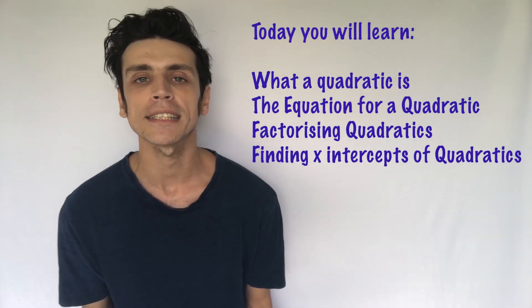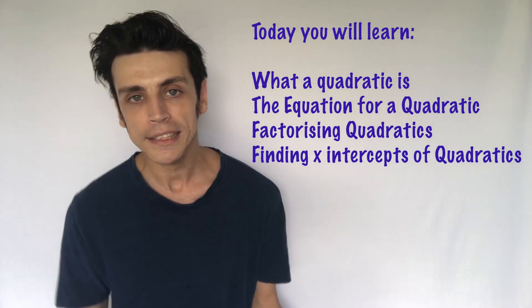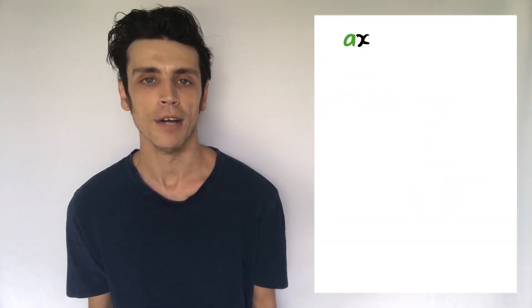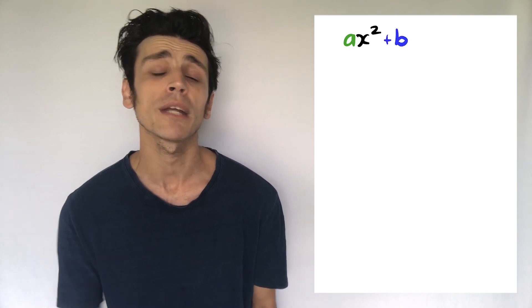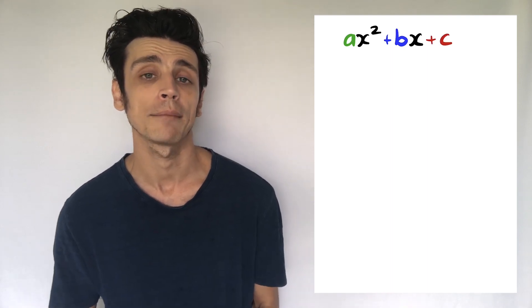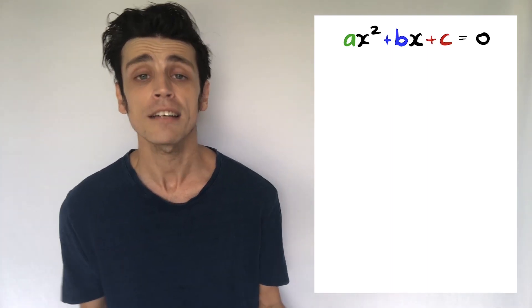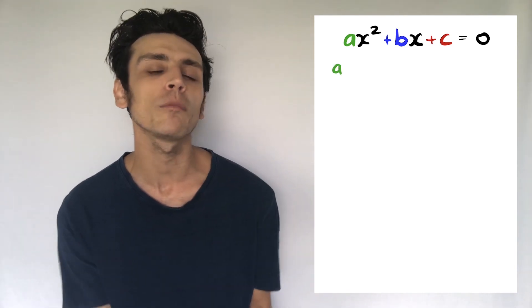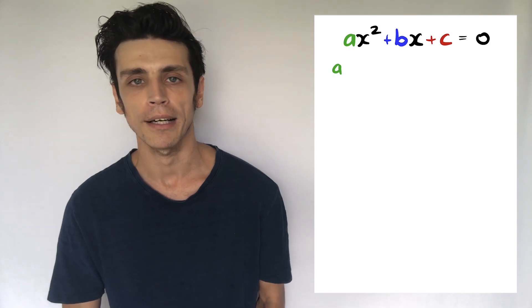In previous lessons we learned about equations of a straight line — when we have a graph with a nice straight line going in the positive or negative direction. Quadratics are a little bit different. What happens in a quadratic is that a curve occurs, and this can also be in the positive or negative direction.